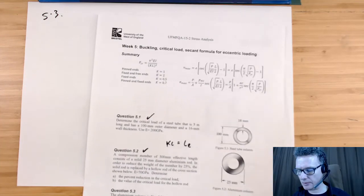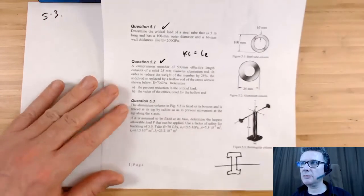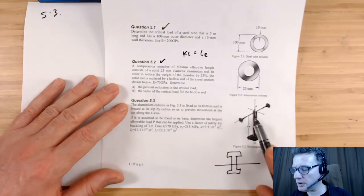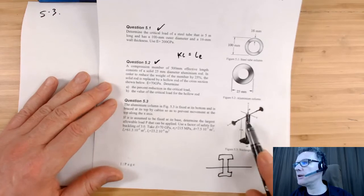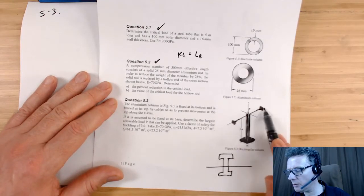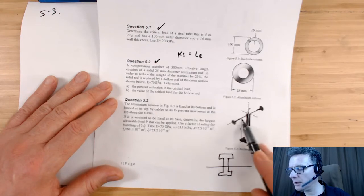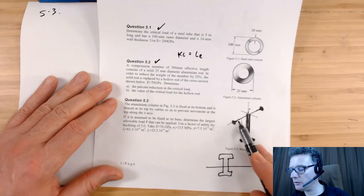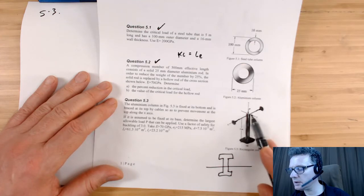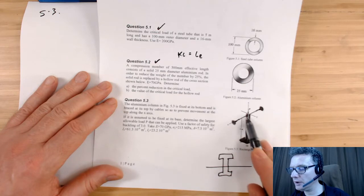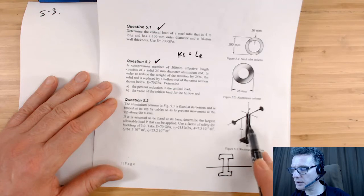Okay, going to look at question 5.3, an interesting question because we've got this setup here where we've got a cable running through the top end here so that the top end of the structure would be allowed to move along the x-axis. However, it's held taut so it cannot move in the y-axis.